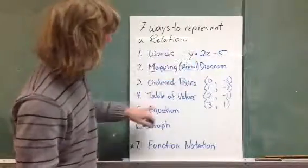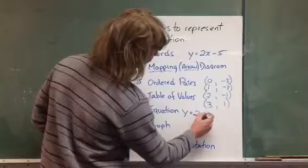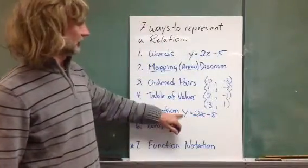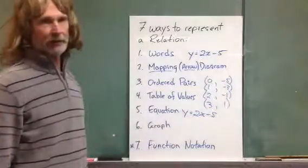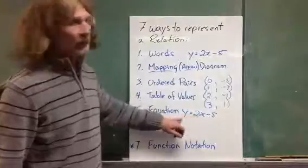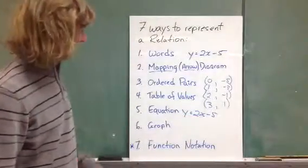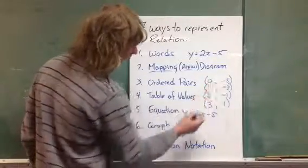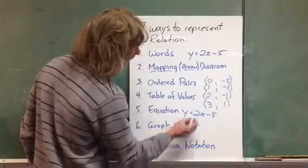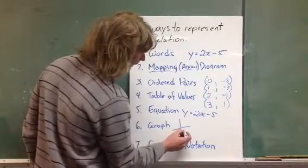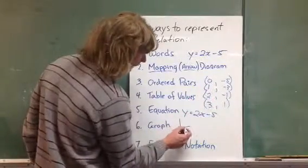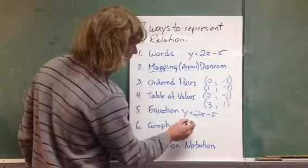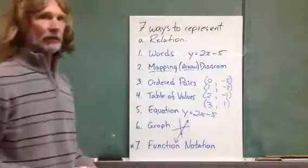This is the equation right there. So, in this case, y equals 2x minus 5 is an equation. And this is a very popular way to do it is the dependent variable equals and then some function of an independent variable. We can, there are other forms which we'll be getting to later. The graph, of course, is when we graph those points on the graph. So, we put these in. 0, negative 5. 1, negative 3. So, 1, negative 3. And 2, negative 1. And 2, negative 1. And 3, 1. And you join those up. And we get some sort of a line.